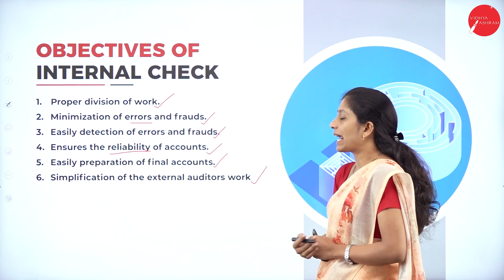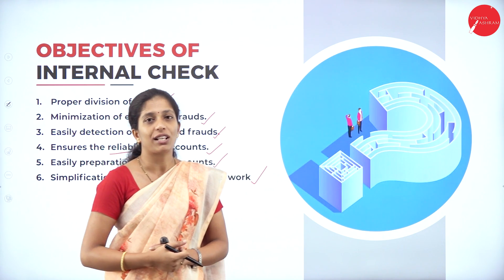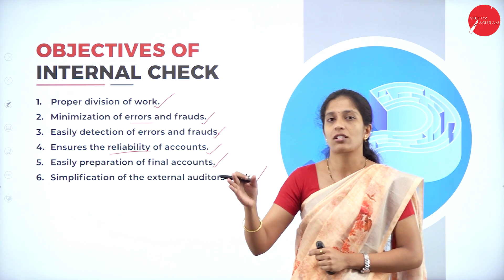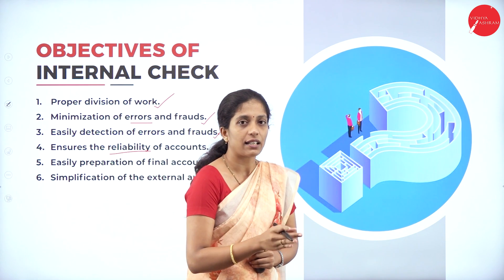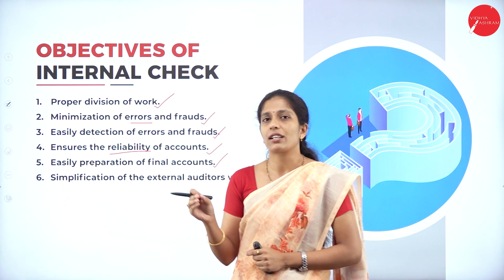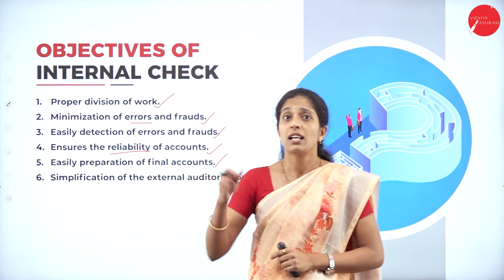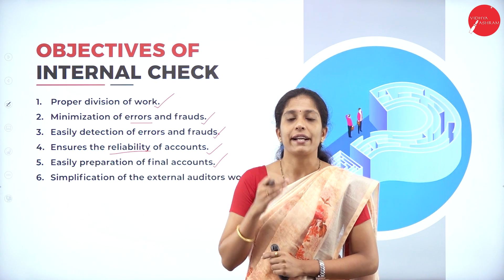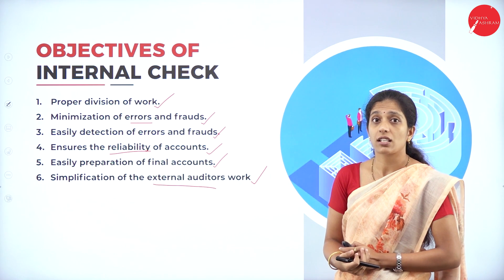Next is simplification of the external auditor's work. An external auditor is an independent person not connected with the organization who comes for the auditing process. Internal check helps the external auditor go through the books of account very easily, because the employees have already conducted the internal check and the books of accounts will be more accurate. The external auditor need not go through each and every transaction, as the employees have already identified the errors and frauds, thereby simplifying the work of the external auditor.